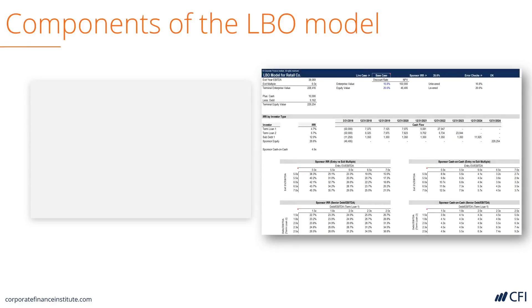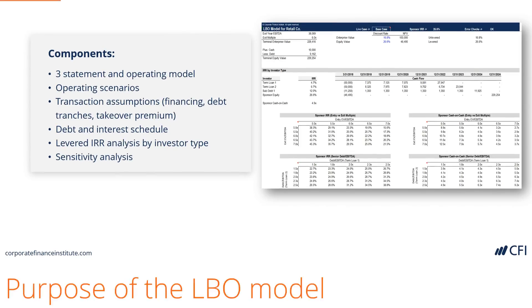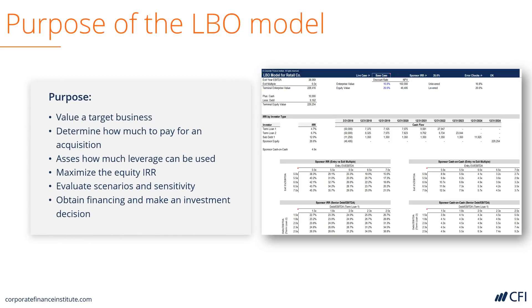Another type of very advanced financial model is a leveraged buyout, or LBO model. It also includes everything in the three-statement and DCF models, plus operating scenarios, transaction assumptions, extensive debt and interest modeling, and finally a major breakdown of the internal rate of return, or IRR, by investor type. Sensitivity analysis may also be layered on top. The use of an LBO model is primarily to value a target business, determine how much to pay for it, and figure out what the internal rate of return to the equity investor or sponsor is going to be. It's also used to evaluate scenarios and sensitivities, and obtain financing from lenders.